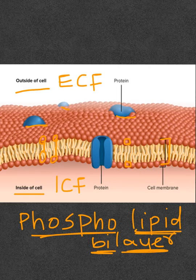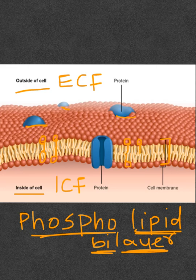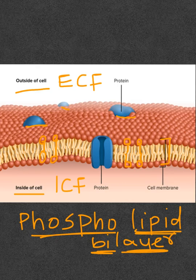There are two phospholipid molecules — one facing the outside of the cell, and one facing the inside of the cell. They are both attached to lipid molecules represented by the tail structures here. Together they make up the phospholipid bilayer of the cell membrane.